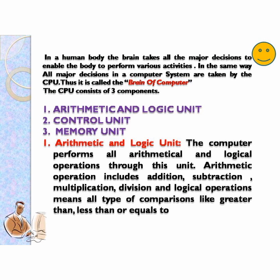So we will discuss the first part: arithmetic and logic unit. The computer performs all arithmetical and logical operations through this unit. Arithmetic operations include addition, subtraction, multiplication and division. Logical operations means all types of comparisons like greater than, less than or equal to. So this is done by the ALU.